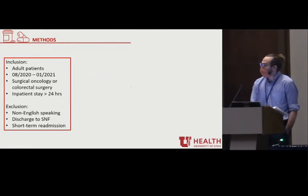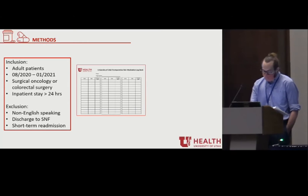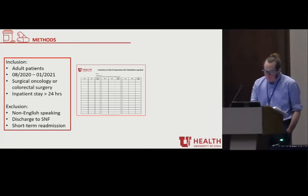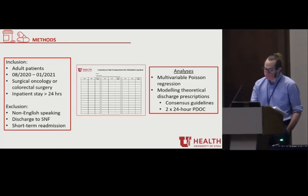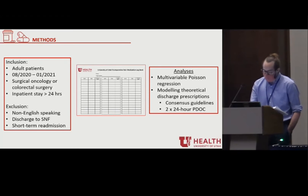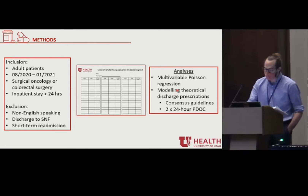In order to generate improved opioid prescribing guidelines, we wanted to see how various prescribing guidelines compare to what patients are actually using once they leave the hospital. To gather this data, we sent all adult patients who underwent major surgery home with an opioid logbook where they wrote down the number of opioid pills they used. We then assessed if any patient or clinical factors were associated with increased 24-hour PDOC, discharge opioid prescription size, or post-discharge opioid consumption. We also created a number of theoretical discharge prescriptions based on existing guidelines, including one based on the 2x24-hour PDOC metric.